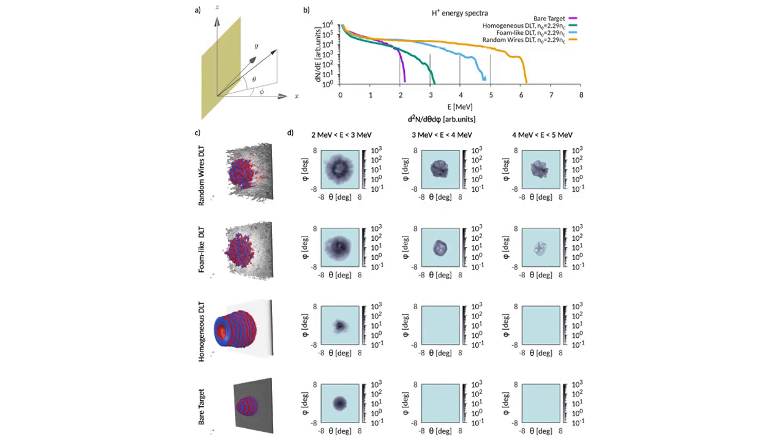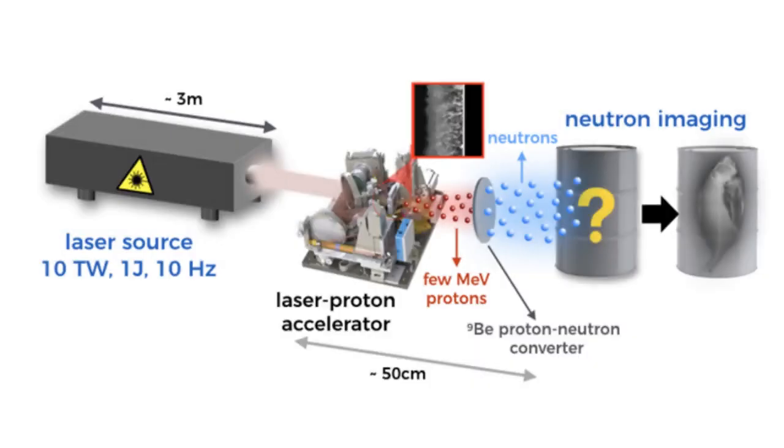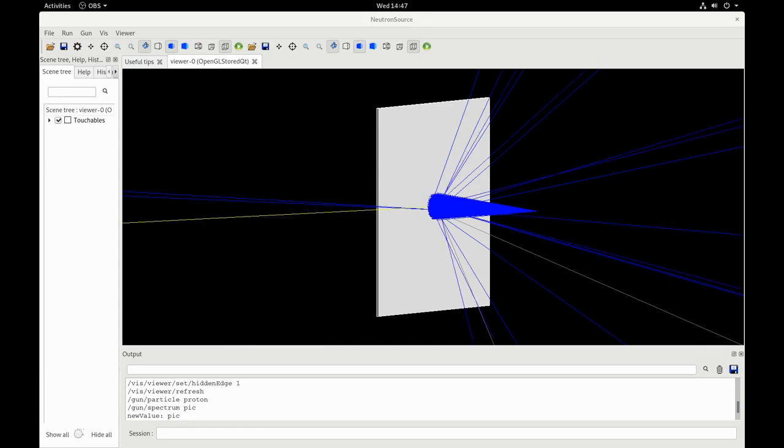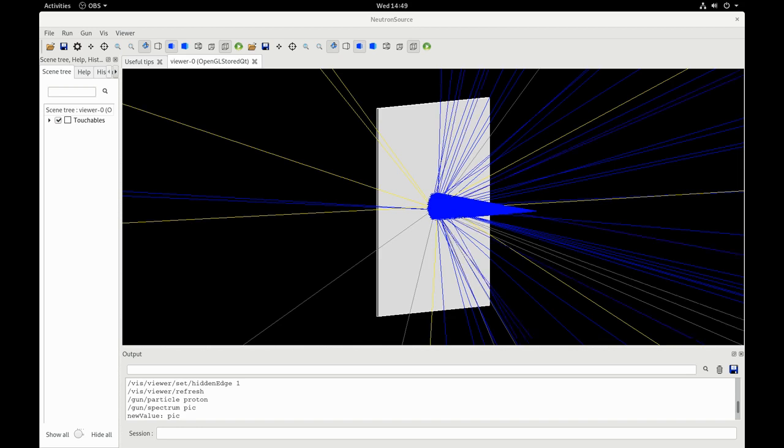We also study neutron generation as an application of the compact laser-driven proton source through the irradiation of a beryllium proton-to-neutron converter. For this purpose, we couple our PIC simulations with Monte Carlo code to simulate the proton-induced nuclear reactions occurring within beryllium, which generate fast neutrons.